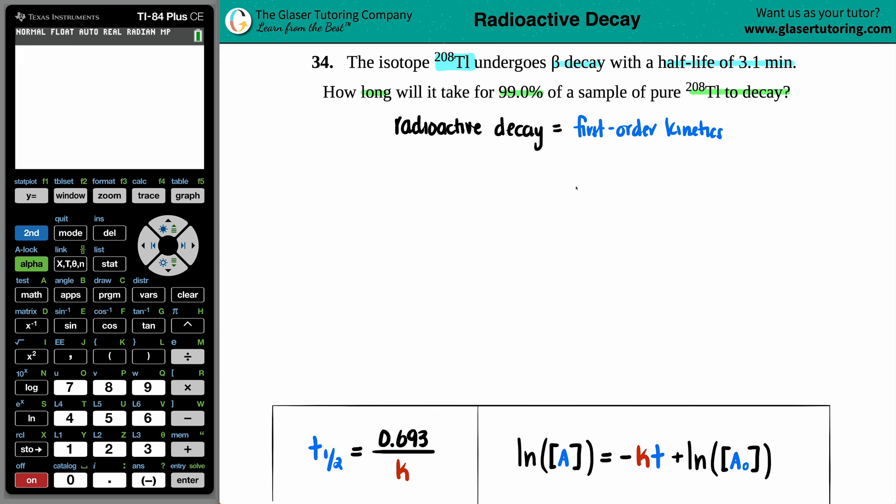Now, generally with this nuclear chemistry chapter, they like to give you new formulas, but I don't think that's necessary. We already learned in our first-order kinetic chapter that there's two first-order equation formulas. Why can't we just use those? It's easier to just memorize two formulas for two chapters instead of memorizing more formulas when you could just use these as radioactive decay.